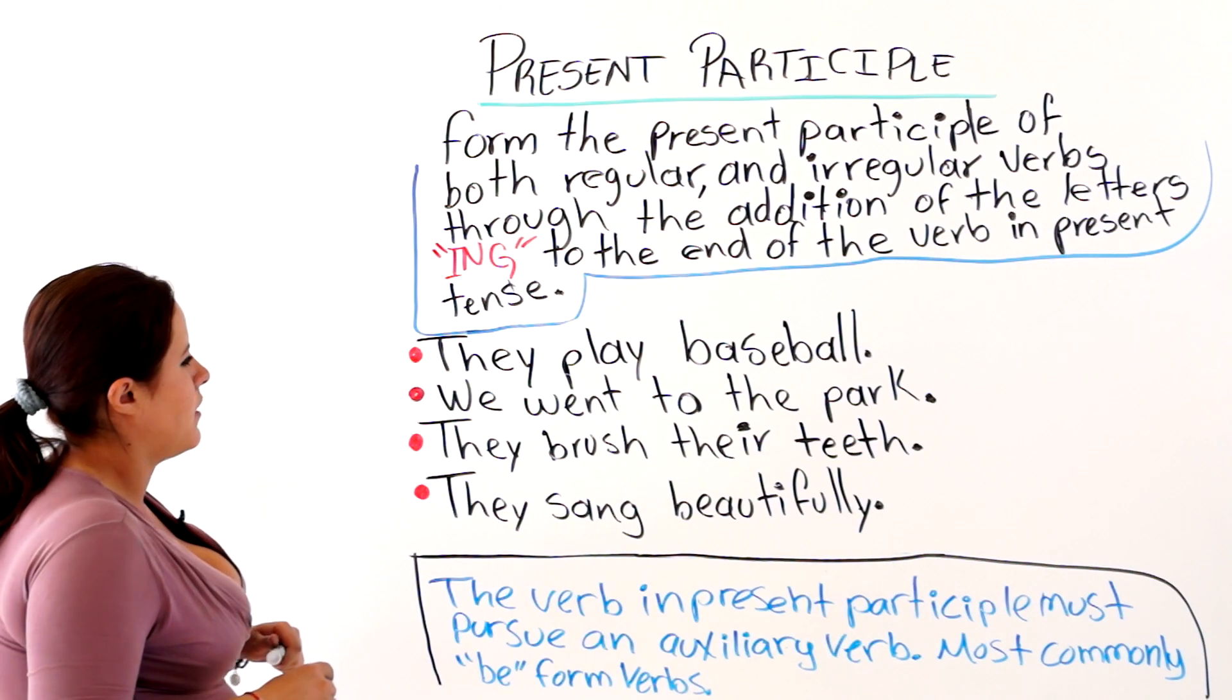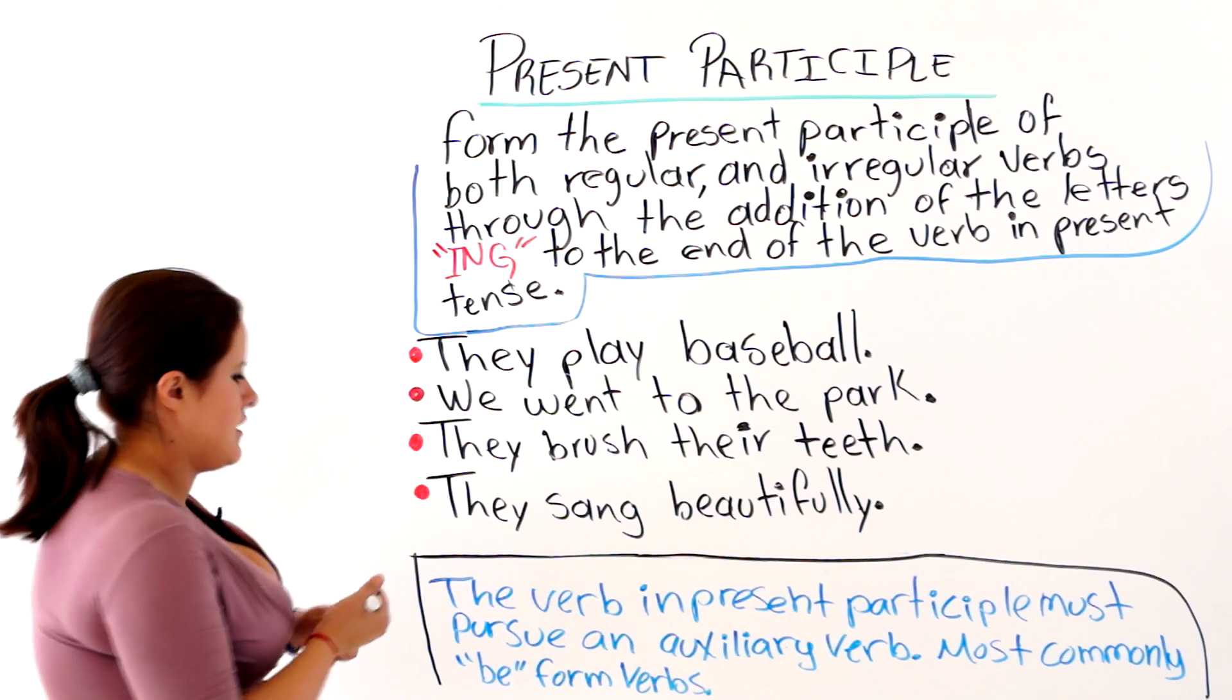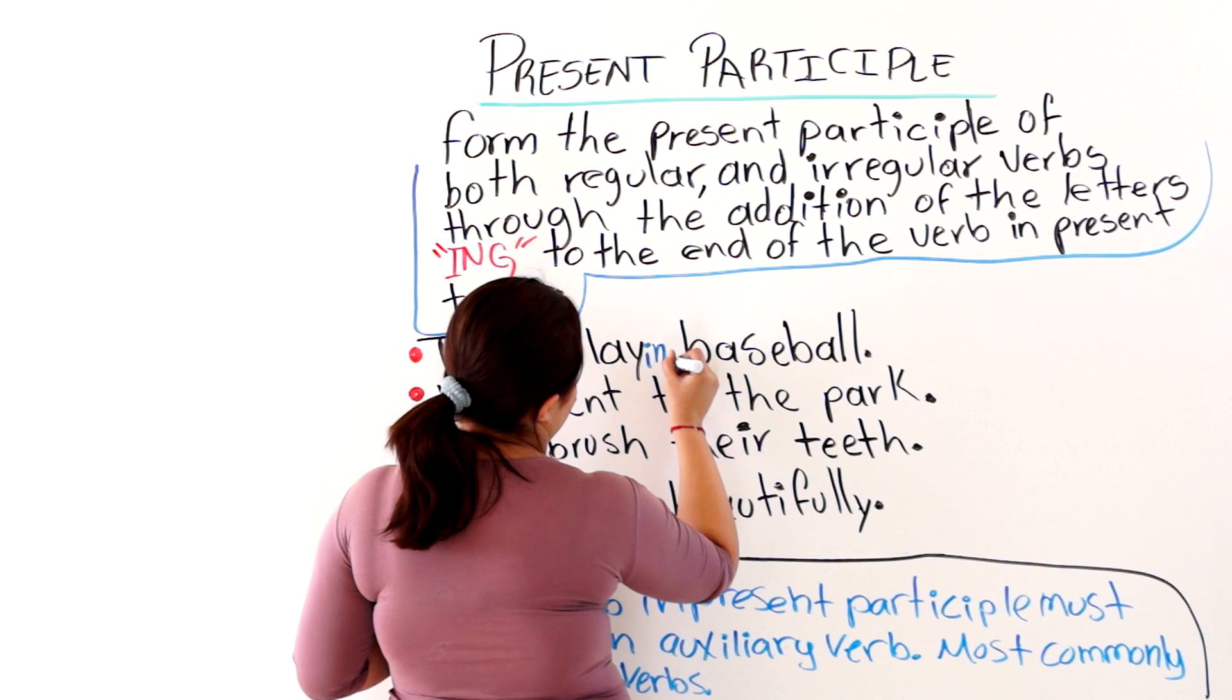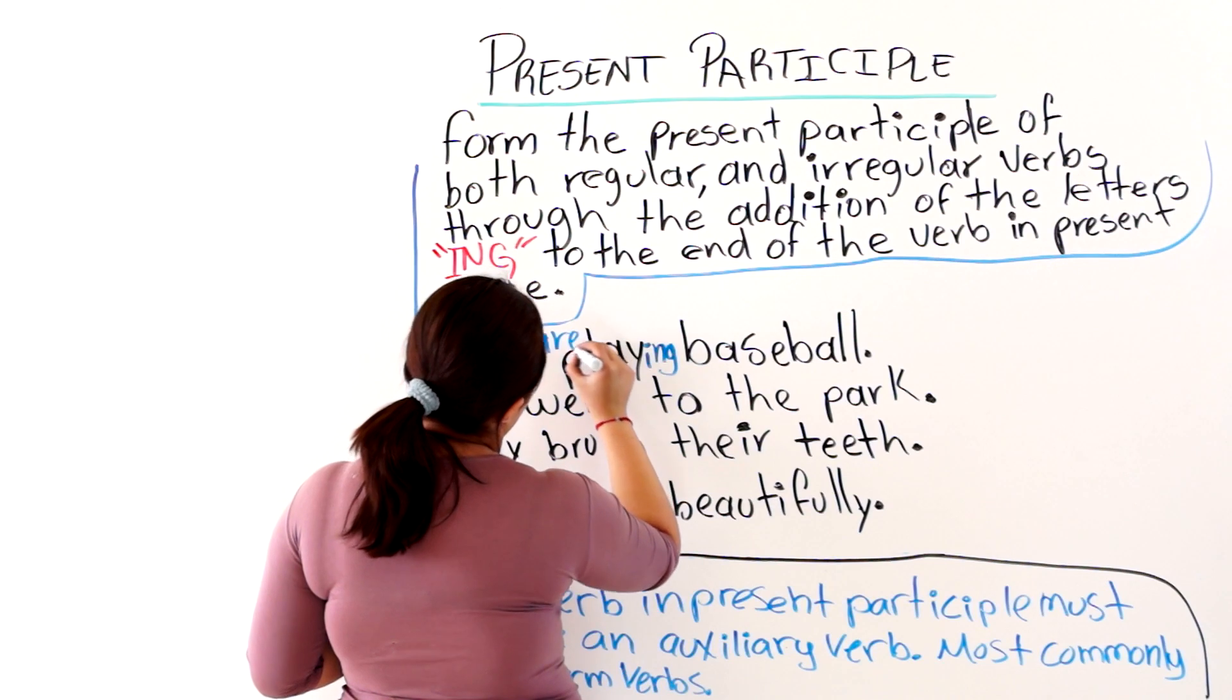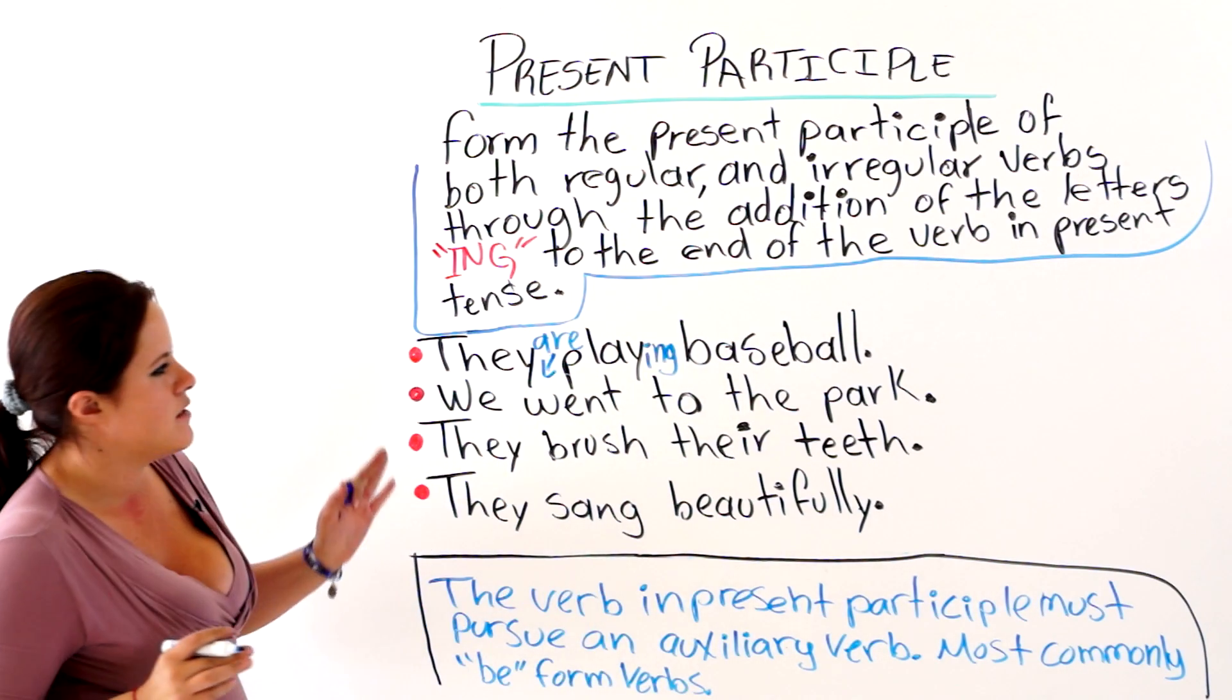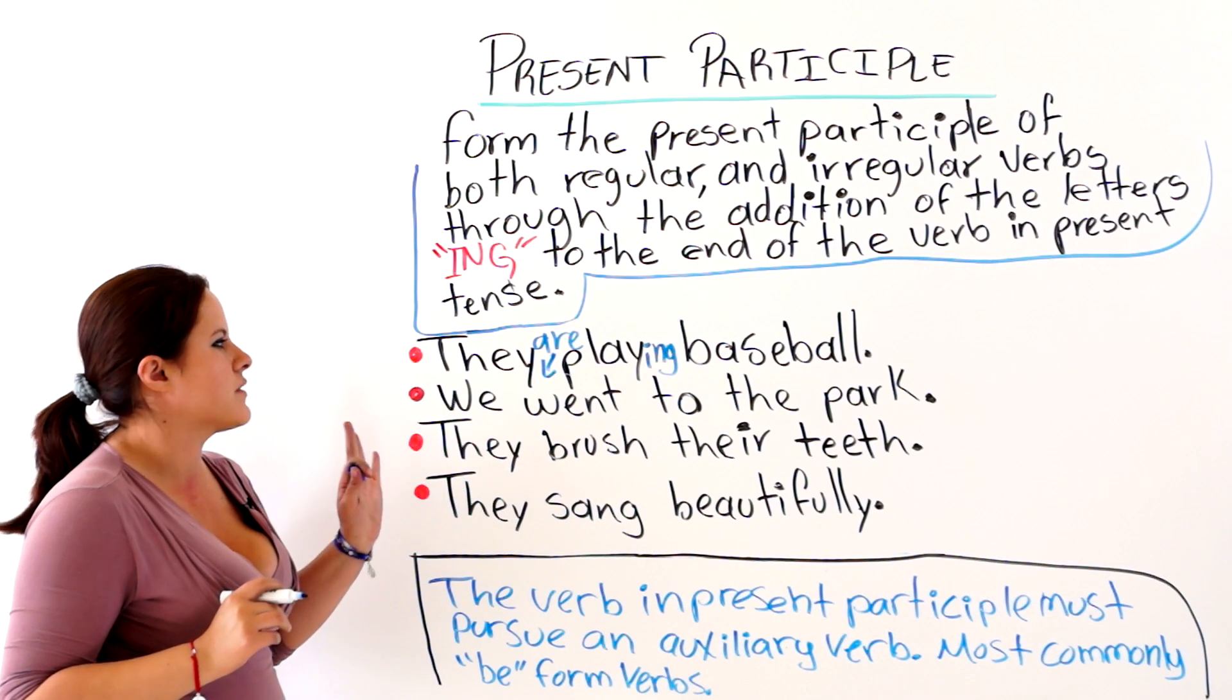The first one says, they play baseball. That is in the present tense. So, we are just going to add ing and are. They are playing baseball. So, now we have the present participle.